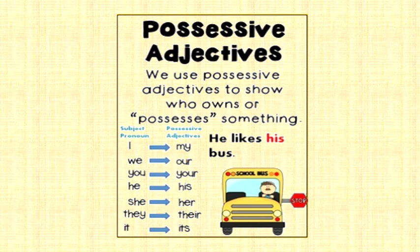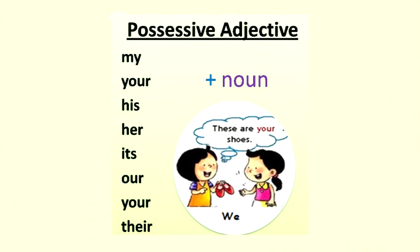Dear children, possessive adjectives are basically the words like my, your, his, her, its, our, your, their. And remember, they have to be used with the noun.